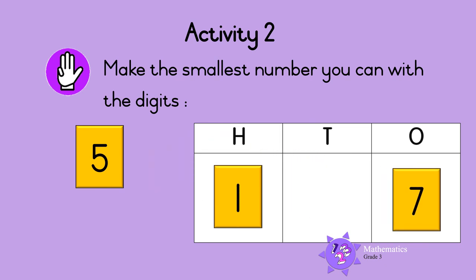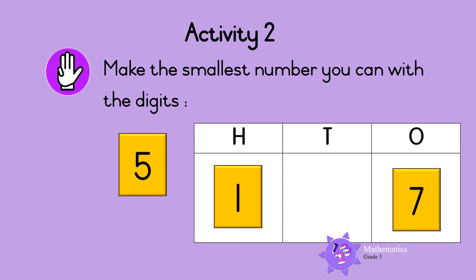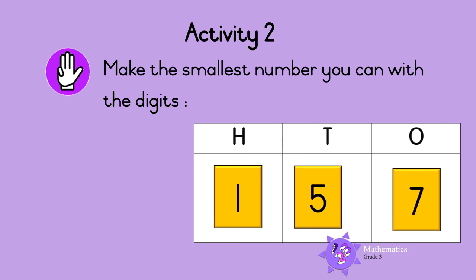Write the remaining digit in the tens column, so five goes in the tens column. So the smallest number that we can make is one hundred and fifty-seven. Well done.